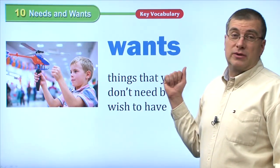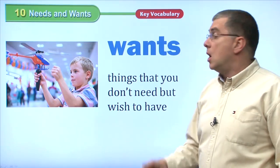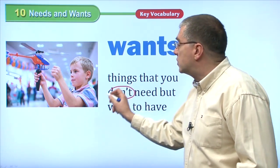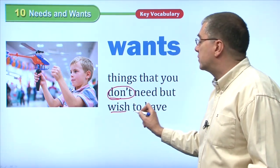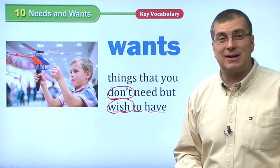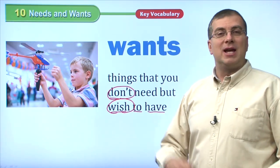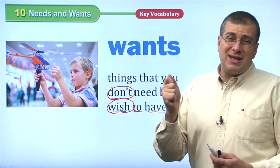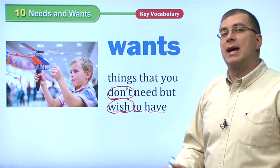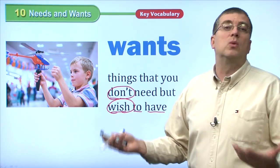Wants. We can use plural or singular — it is a want, or they are wants. Wants are things that you don't need, but wish to have. Wish, of course, means want. This boy is playing with a toy helicopter. He's in the store. He probably says to mom, 'Mommy, please buy me this helicopter.' He doesn't need it, but he wants it. So, needs and wants — they're different things. Needs, you must have them. Wants are things you just wish that you had.